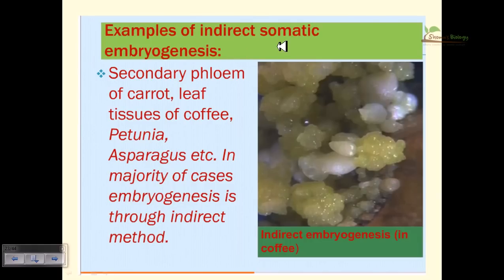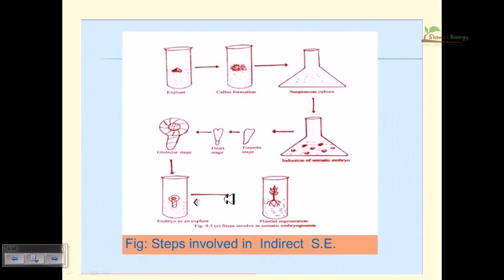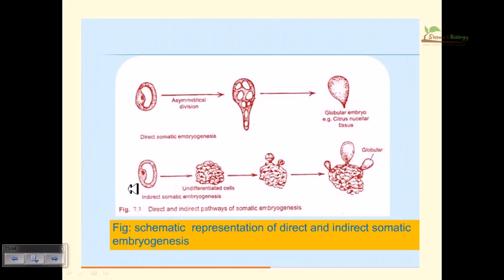Examples of indirect somatic embryogenesis include secondary phloem of carrot, leaf tissue of coffee, and asparagus. In the majority of cases, embryogenesis proceeds through the indirect method because the cells taken for embryogenesis are usually not destined to produce embryos and must be induced. The steps are: explant → callus formation → suspension culture → globular stage → heart-shaped → torpedo stage → mature plant.